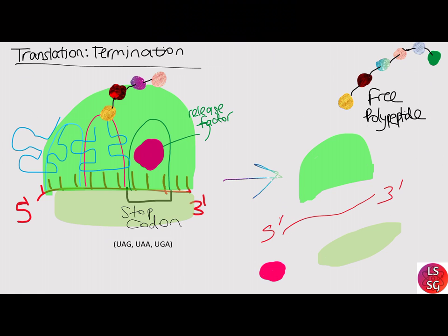The small and large ribosomal subunits detach from the messenger RNA and from each other. After translation is complete, the messenger RNA is degraded so the nucleotides can be reused in another transcription and translation process. Thank you for watching. Hope you enjoyed the video.